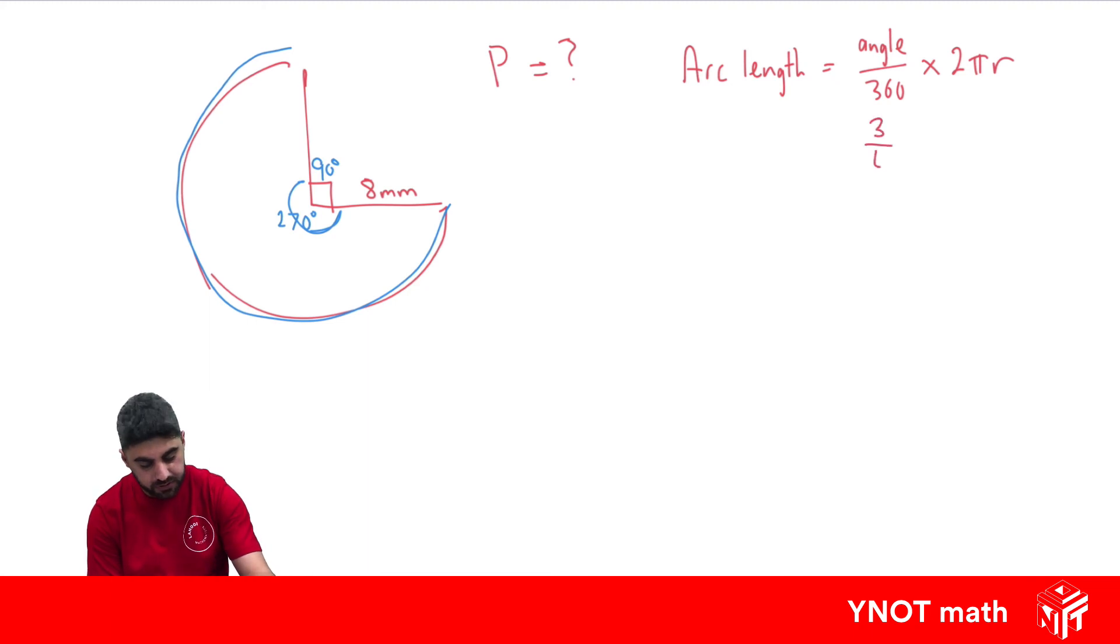So that's what I'm going to do. Times 2 times π times its radius, which is 8. Putting that in the calculator is going to give us 37.7 millimetres to one decimal place.